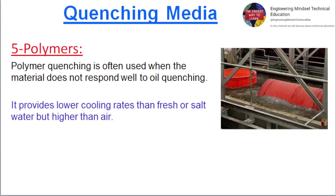5. Polymers. Polymer quenching is often used when the material does not respond well to oil quenching. It provides lower cooling rates than fresh or salt water, but higher than air.